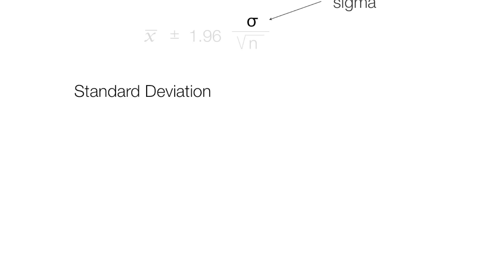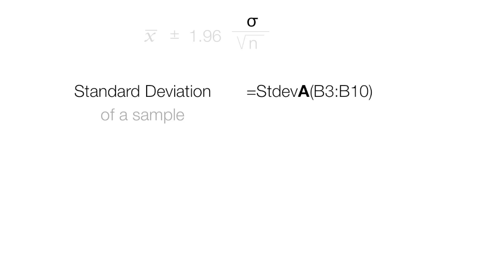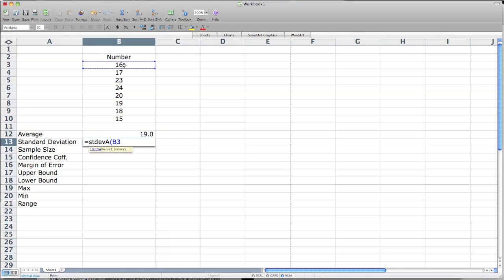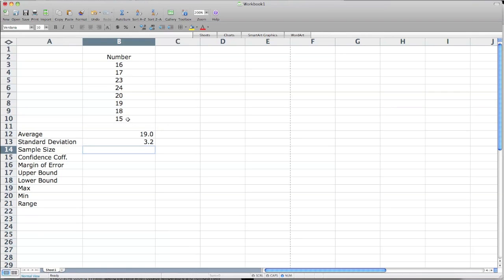Now I'll calculate the standard deviation, also known as sigma. The standard deviation of a sample is what we're going to calculate. Make sure that when you use the standard deviation, you use the one with the A, which stands for sample, and that's also going to be from B3 to B10. I click the equal sign and start writing STDEVA for sample, open parentheses, click on B3, drag down, close parentheses, enter. 3.2 is my standard deviation.